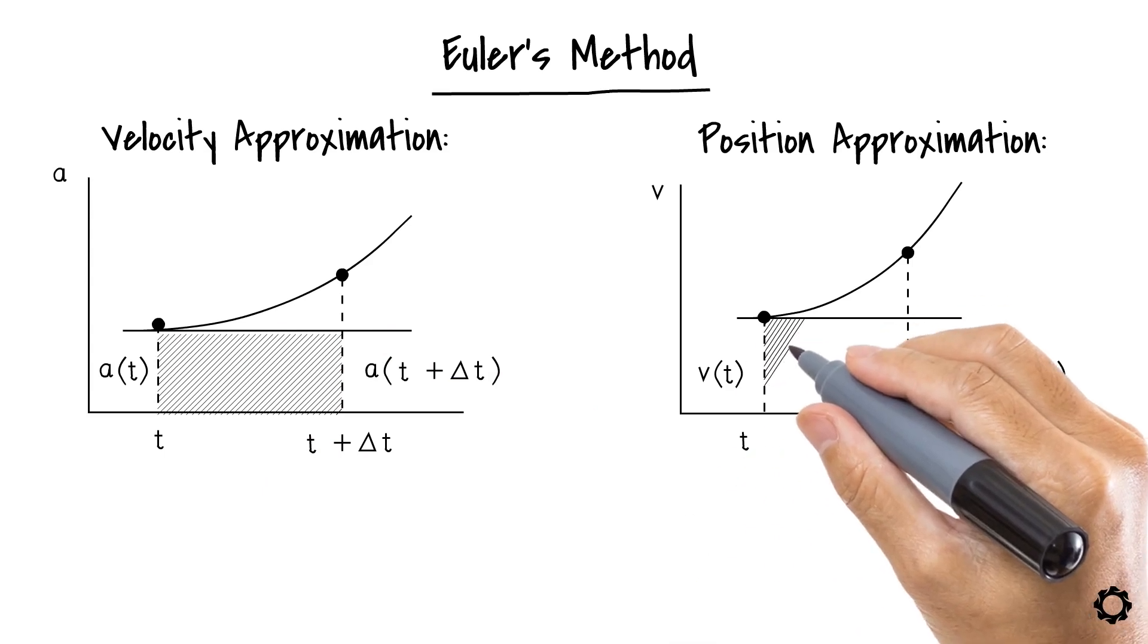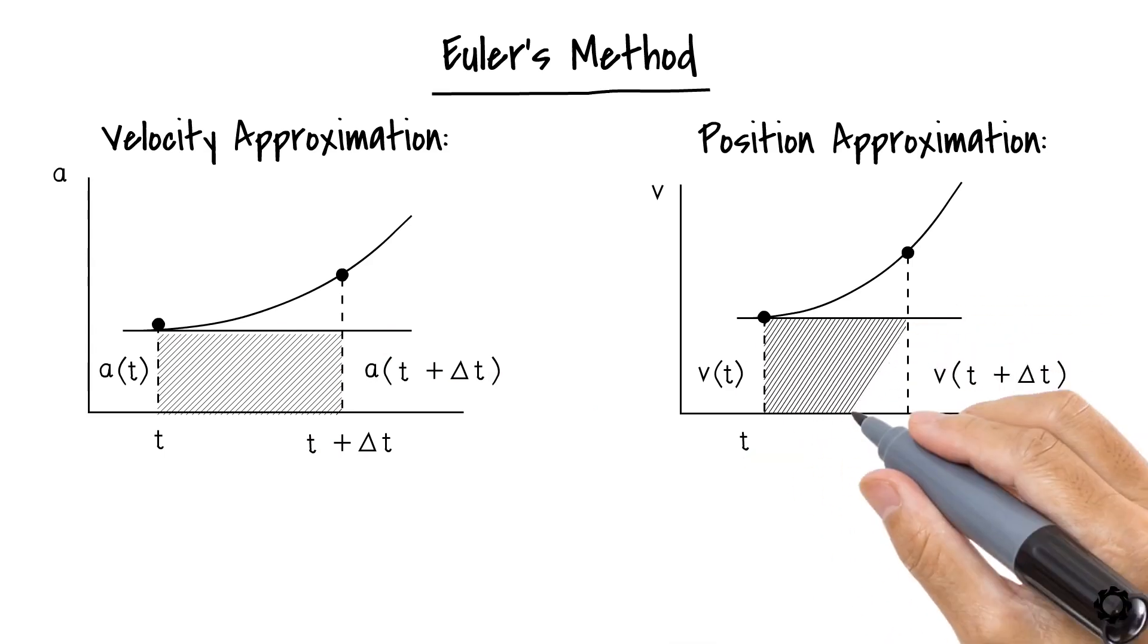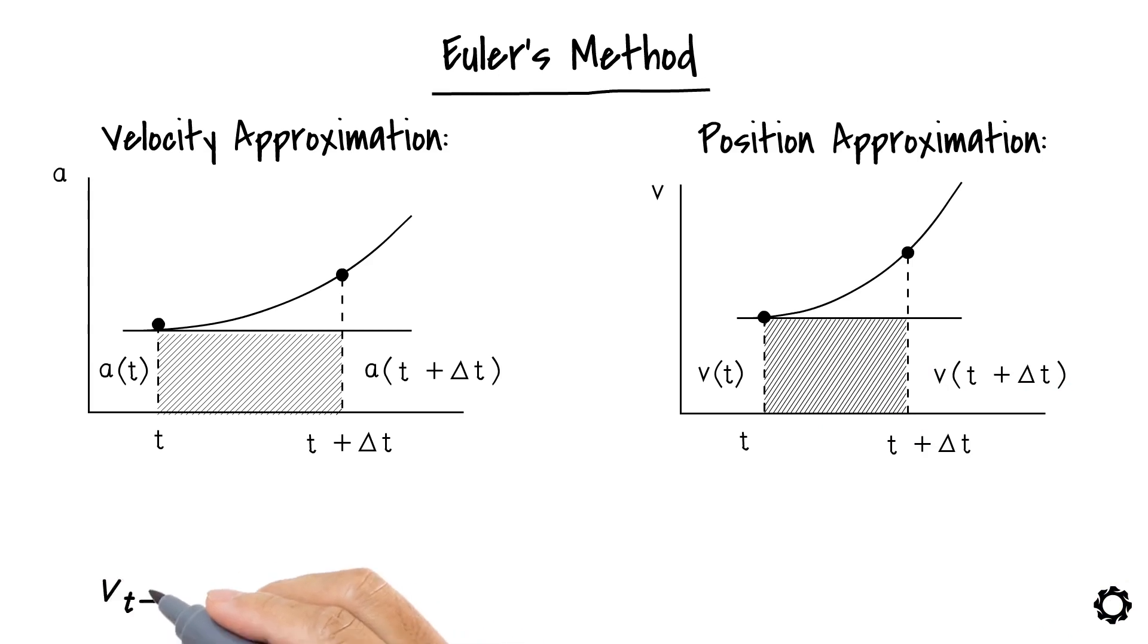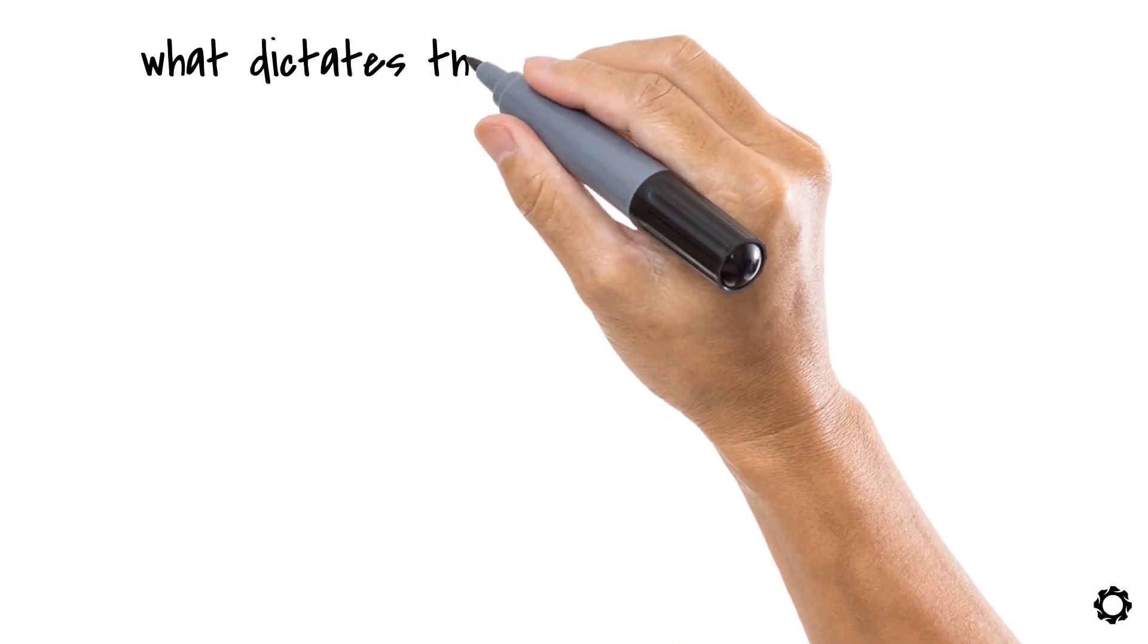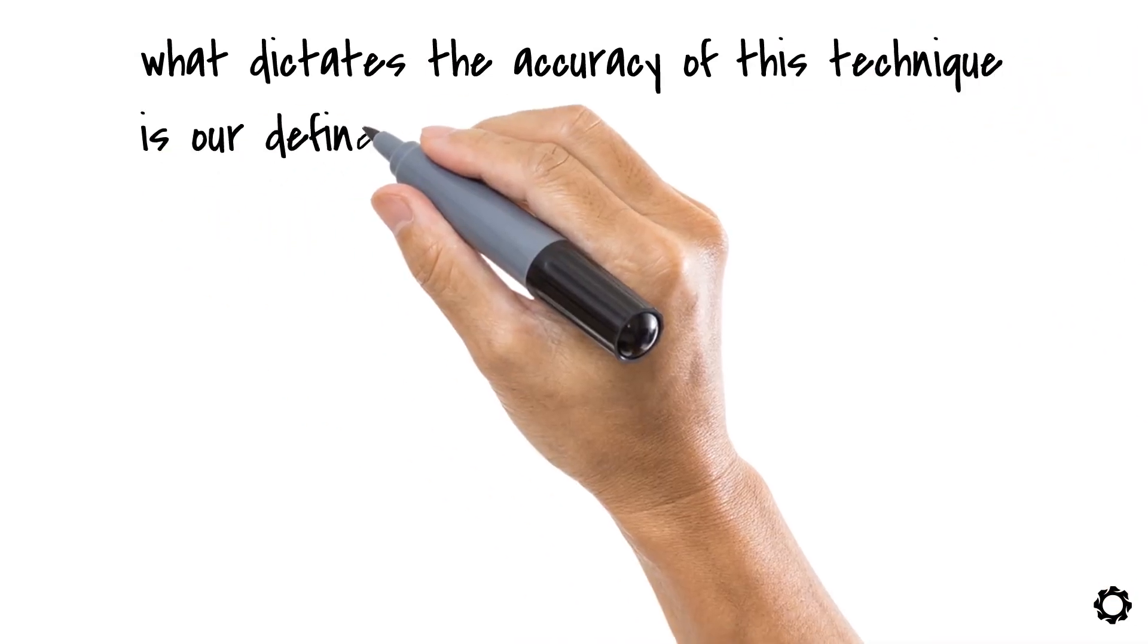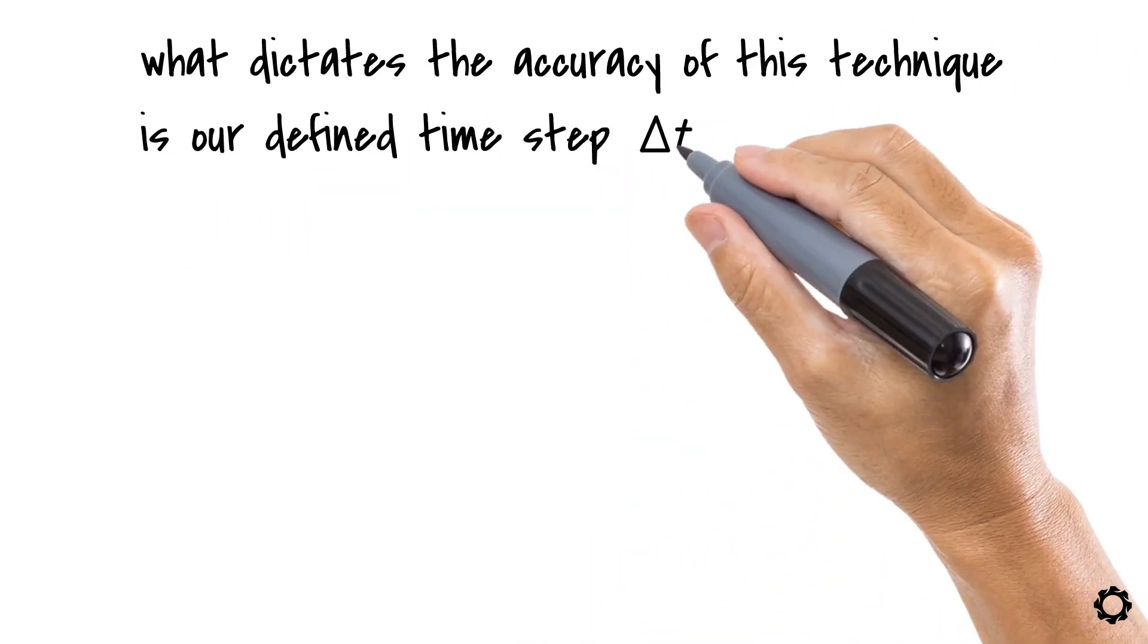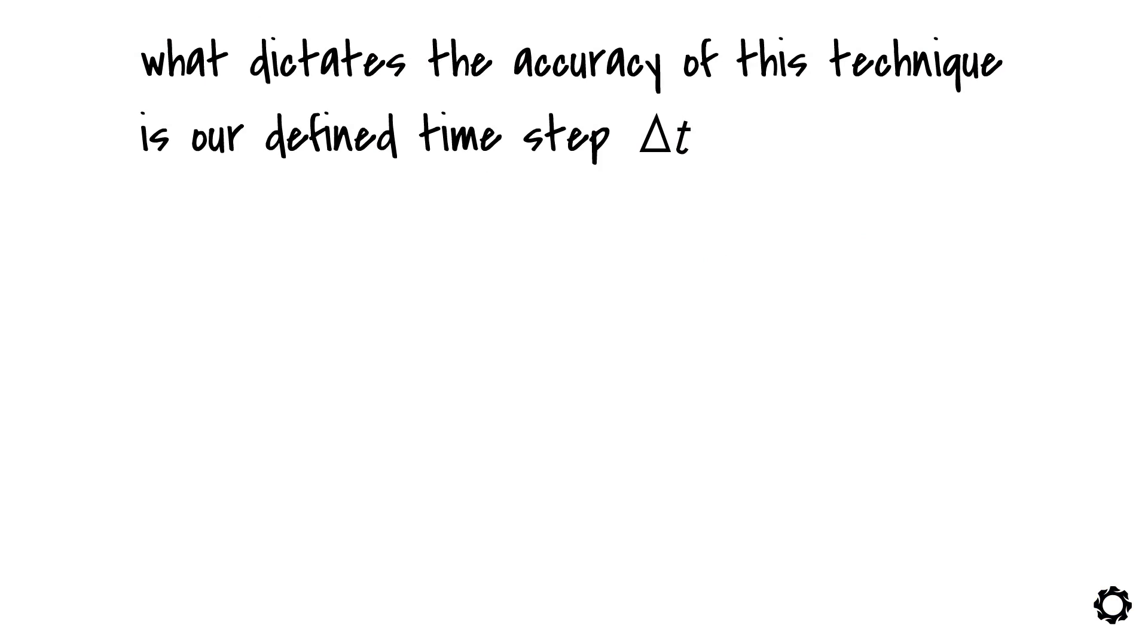The rectangular areas related to the velocity and position integral values can be measured by using these equations. As we can see from the equations, Euler's numerical integration technique is an iterative procedure which requires some boundary conditions. In this case, the boundary conditions are the initial values of the position and velocity which are changing for every iterative step. Note that what dictates the accuracy of this technique is our defined time step delta t, which should remain the same for every iteration to avoid errors.